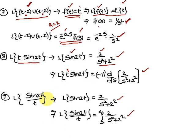Ninth problem: Laplace of sin(2t)/t. Laplace of sin(2t) is known. For division by t, always apply the integral from s to infinity: ∫[s to ∞] Laplace of sin(2t) ds, which gives the answer after simplification.